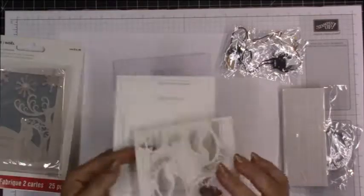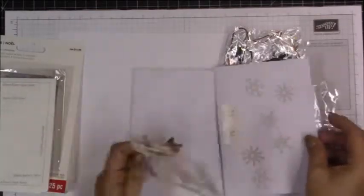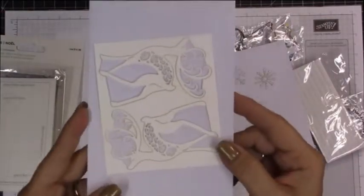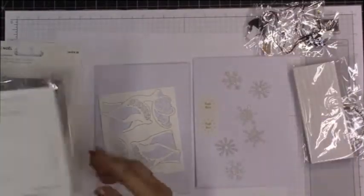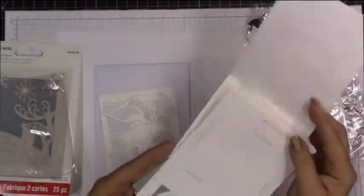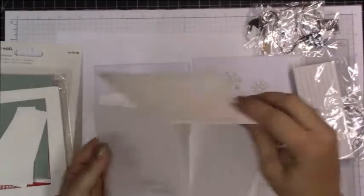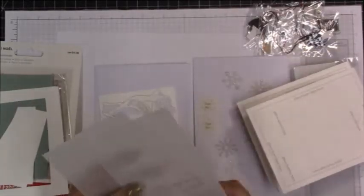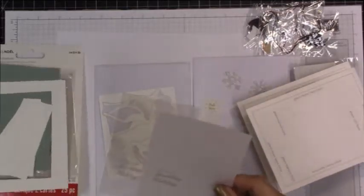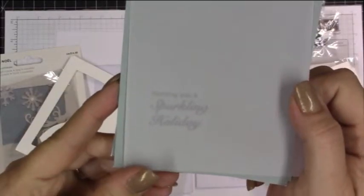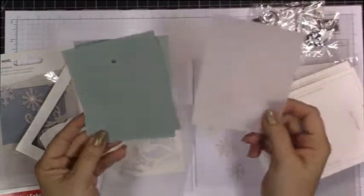These are the card bases which are really cool. Here's the die cuts, you have two deer. Now I don't know if mine were just wrong or printed backwards but you'll see at the end my design, the deer is facing the opposite way than the sample card. So you have two vellum sheets that have your sentiment, wishing you a sparkling holiday.